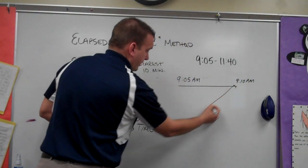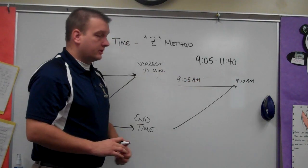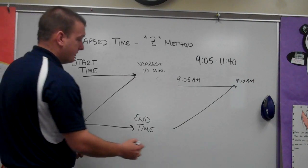Now, the middle part of the Z, we want to go to the nearest hour to our end time. So the next closest hour to that would be 11 a.m.